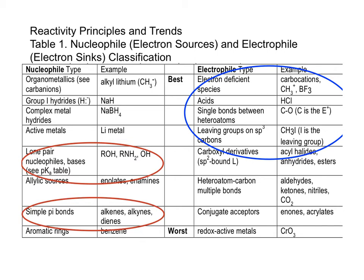We will look at the other types of nucleophiles and electrophiles in the second semester of organic chemistry. You may want to keep this table handy to help you identify the structural features in a molecule and help you determine how a reaction occurs.